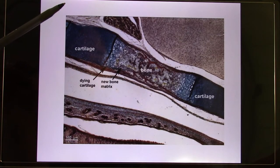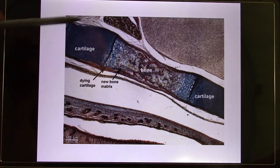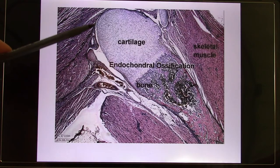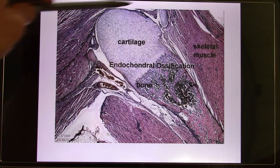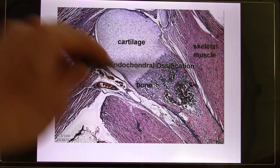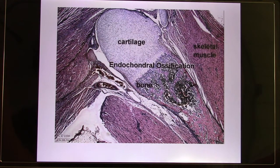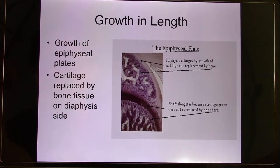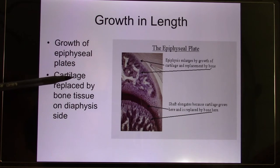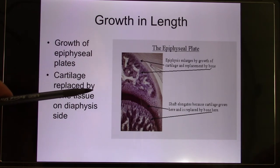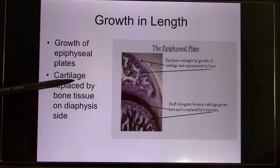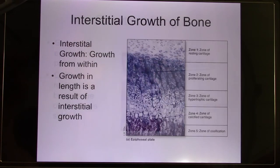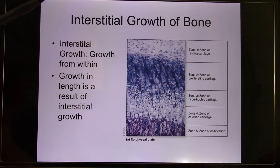This is a very young bone — based on what you've learned, you can see a lot of cartilage. Another example also shows a pretty young bone because there's a lot of cartilage at the two ends; it goes through the endochondral ossification process. The epiphyseal plate is where the bone grows. Let's look at how cartilage gradually turns into bone — the process is very similar to skin growth.